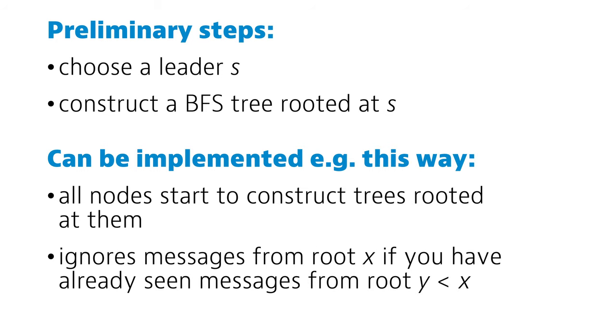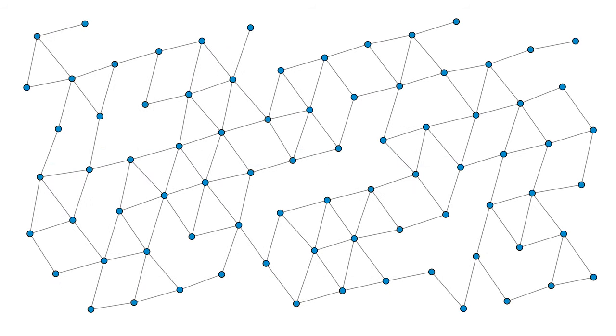Everyone first thinks they are leaders, and start to construct trees rooted at them. And then we just ignore messages coming from one root if you have already seen messages coming from a root with the smaller identifier.